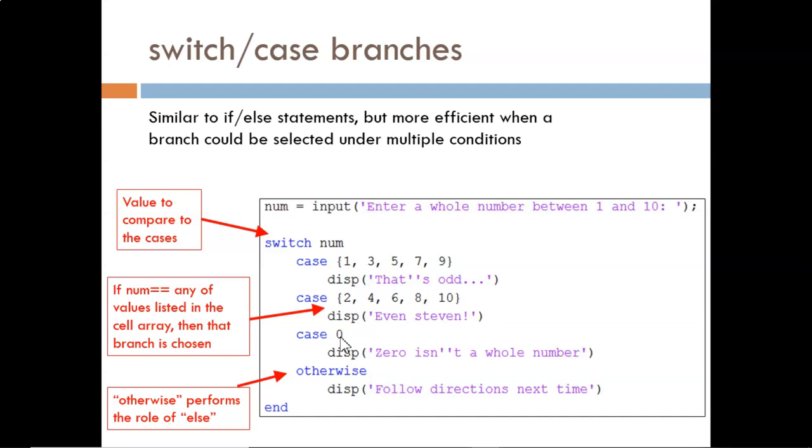And if the user inputs 5.9, then no cases will match it, and the otherwise branch is selected. We could have performed this exact same logic with if-else branches, but the conditions would require several OR statements to handle all the cases. It is more efficient to type and more efficient for the code to run using switch case.